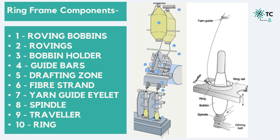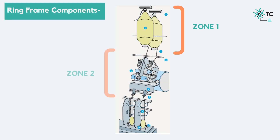Number two in the figure is the roving, which is drafted and twisted to form the yarn. These bobbins are held by the bobbin holder, which is numbered as three. Now the guide bars, which are numbered four, guide the rovings towards the drafting zone. Number five is the drafting zone, where the roving is attenuated to the required count and also dealt with irregularities. Number six is the fiber strand, which will come out of the drafting zone for twisting and is guided by a yarn eyelet, which is numbered as seven. Now number eight, we have the spindle, which rotates at a high speed imparting the twist to the fiber strand and also giving the drive to the traveler on the ring, which are numbered as nine and ten respectively. This final bobbin is mounted over the spindle where the yarn is wound. We'll discuss each one of them zone-wise — zone one, zone two and zone three, as depicted in the image.